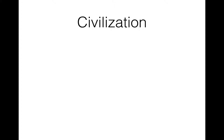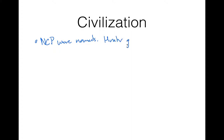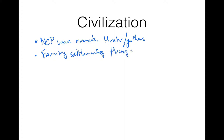All right, so civilization — that's what we're focusing most of our time on today. A couple things to know: first and foremost, many people in China settled along the North China Plain. They were nomads — hunter-gatherers — meaning they went from place to place hunting and gathering their food, going wherever the food was. Over time, farming settlements began popping up in the Huang Valley around 5000 BCE, meaning the Chinese have had a culture within that region for about 7,000 years.